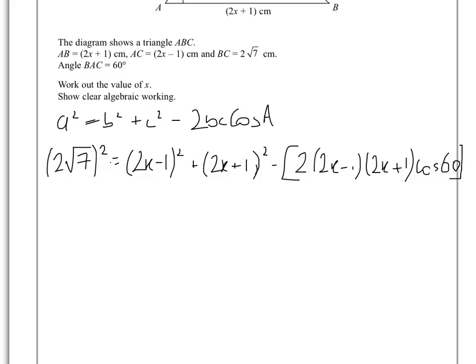So when you work that out, 2 times by root 7 squared will give us 4, root 7, root 7, and obviously root 7 times root 7 is just 7, so we've got 7 times 4, so that's 28 equals, and when we multiply out this first bracket we get 4x squared minus 4x, because you'll get minus 2x minus another 2x plus 1, and in the next bracket we get 4x squared plus 4x plus 1,